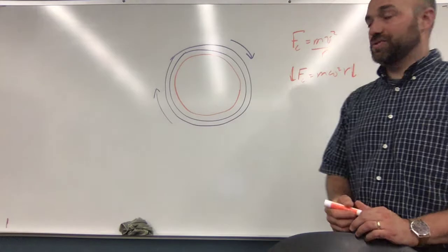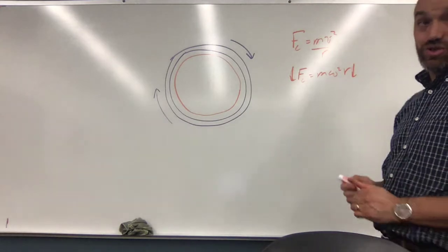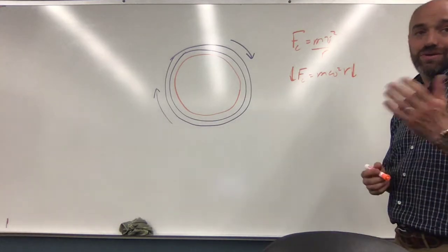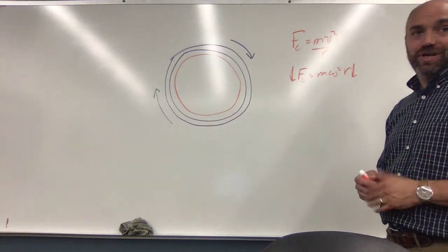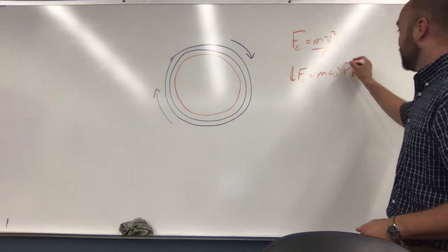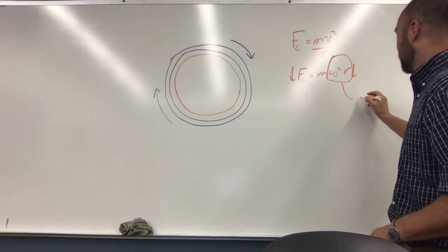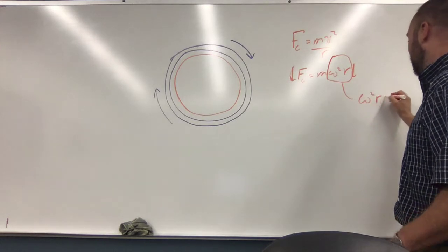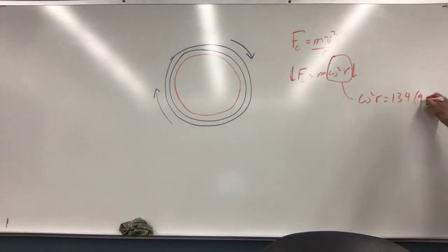Yeah. So, in other words, the acceleration, the centripetal acceleration is 134 g's. So the acceleration, this part here, omega squared times r has to equal 134 times 9.81. That's what they mean by g's.